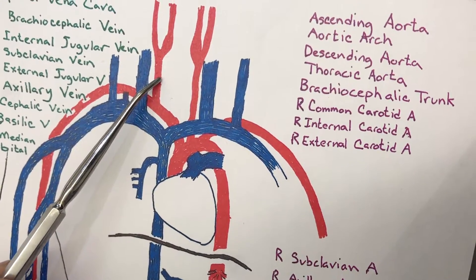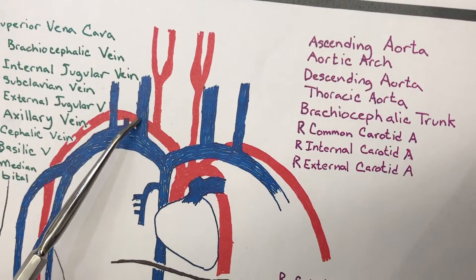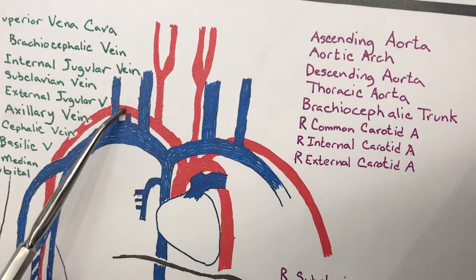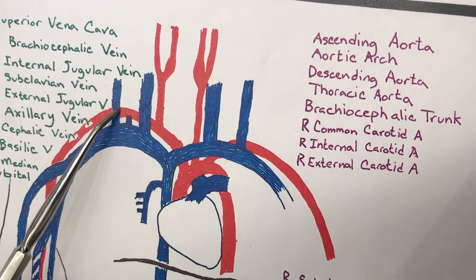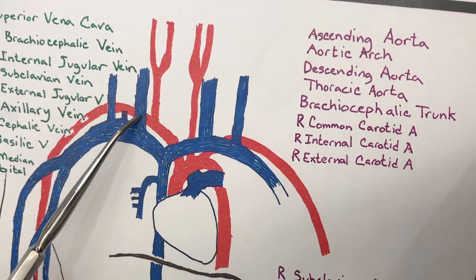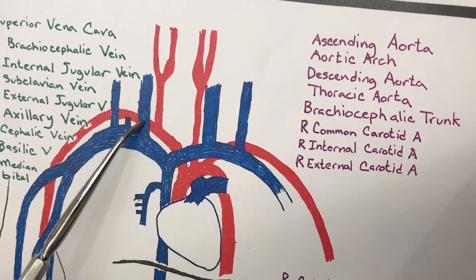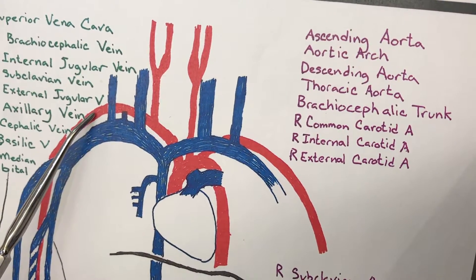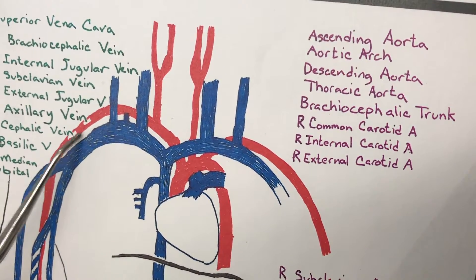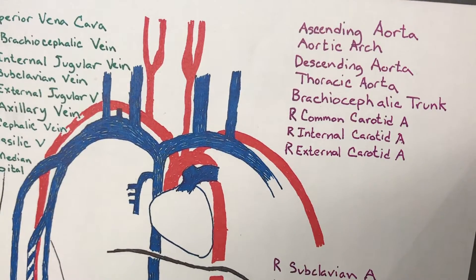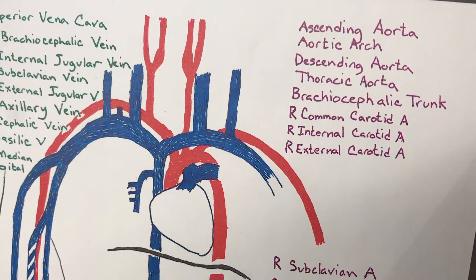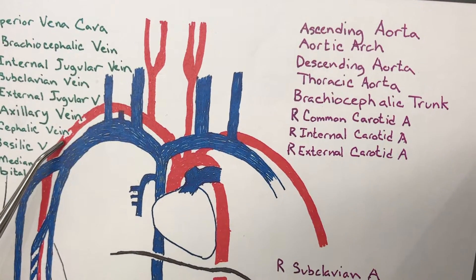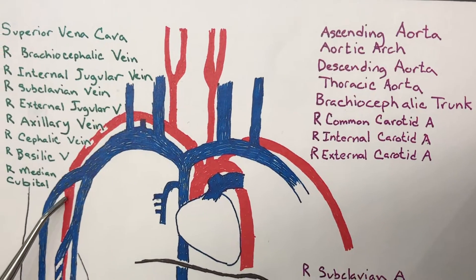Over here, this is your right common carotid artery, and this here is your right subclavian artery. The subclavian, as soon as it exits rib one, becomes the axillary artery. And from the armpit to the elbow, that becomes the brachial artery.